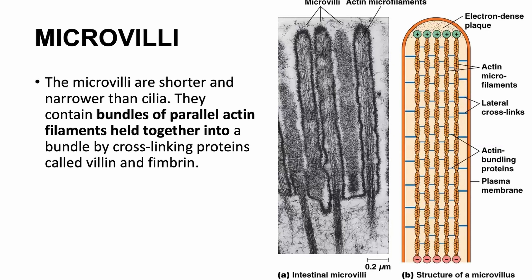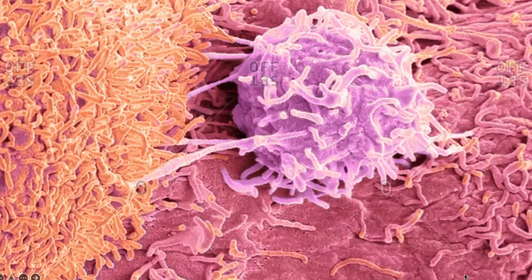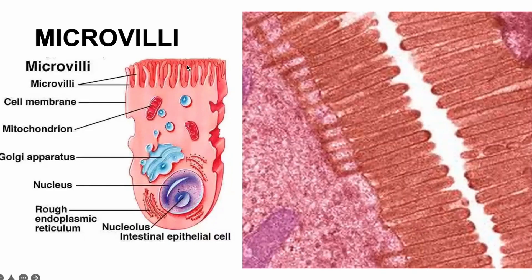The cross-linking proteins in microvilli are called villin and fimbrin. If I ask you where we find microvilli, you would say the epithelial cells lining the gastrointestinal tract — enterocytes. Just as you have keratinocytes and hepatocytes, you have enterocytes. This image shows the structure of microvilli from a bigger perspective — the apical surface of the cell with microvilli projecting outward. The protein structures project from within the cytoplasm through the membrane and out of the cell.